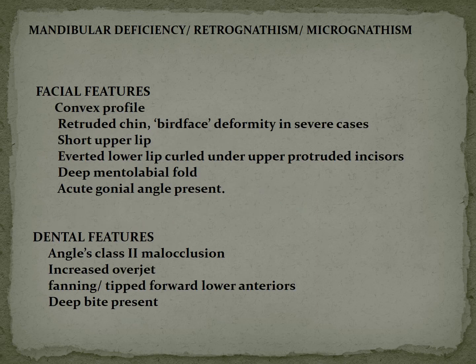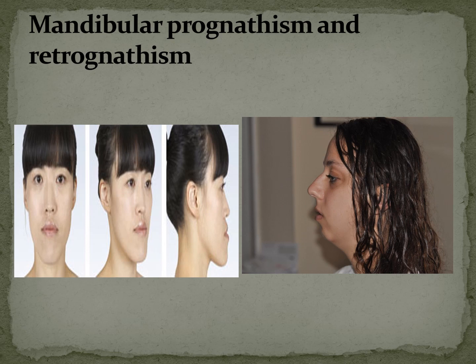Mandibular deficiency, also called retrognathism or micrognathism, presents with a convex profile and a receded chin called bird face deformity in severe cases. Features include a short upper lip, averted lower lip, curled-under upper protruded incisors, deep mentolabial fold, and acute gonial angle. Dental features include Angle's Class II malocclusion with increased overjet, fanning or tipping forward of lower anteriors, and deep bite.